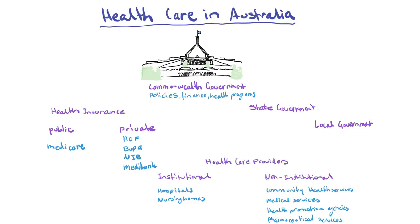In summary, this dot point covers health facilities and services: private hospitals, public hospitals, psychiatric hospitals and nursing homes under institutionalised care, and then non-institutionalised care including medical services, health-related services, community services and pharmaceuticals.